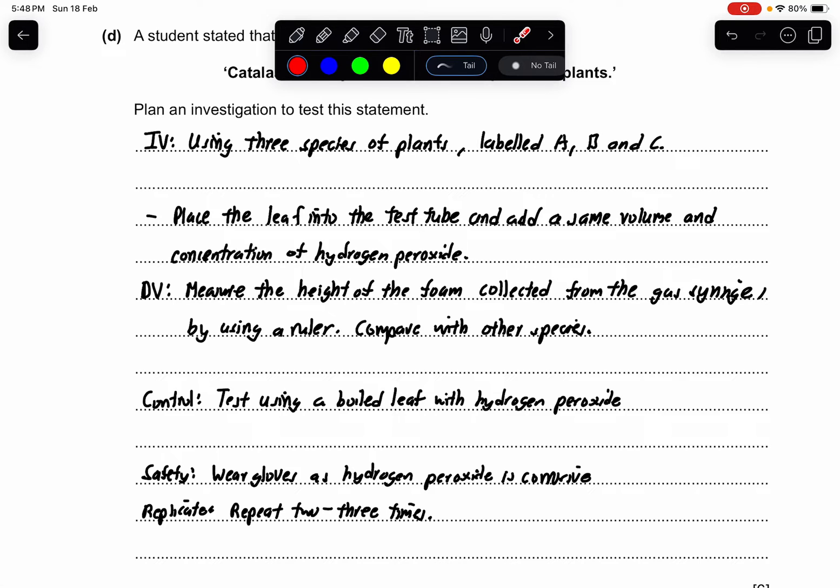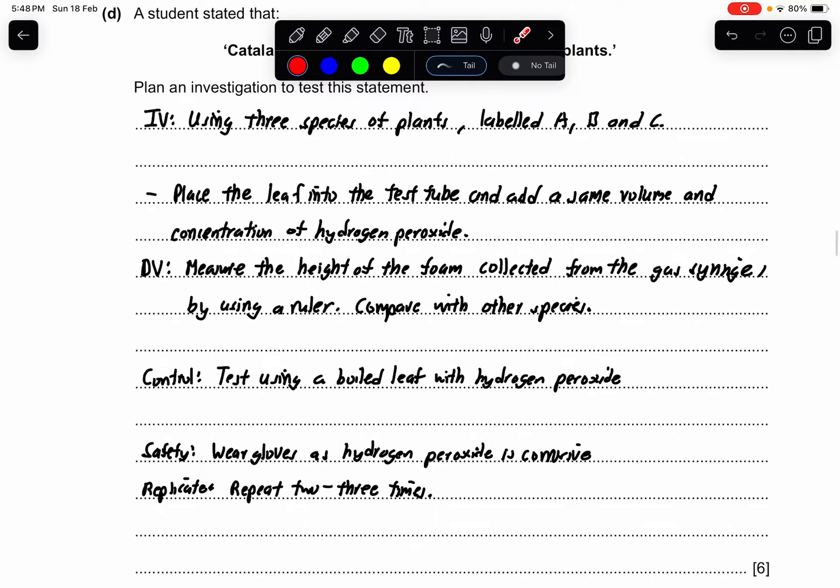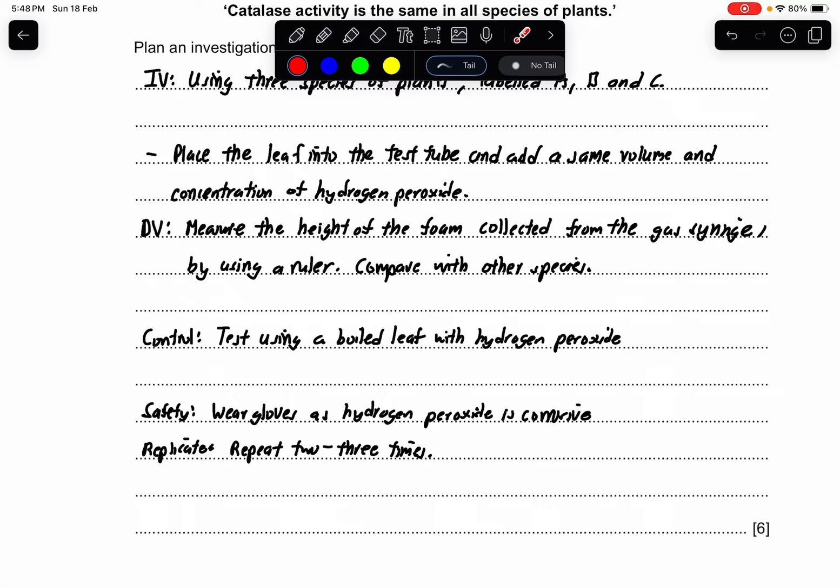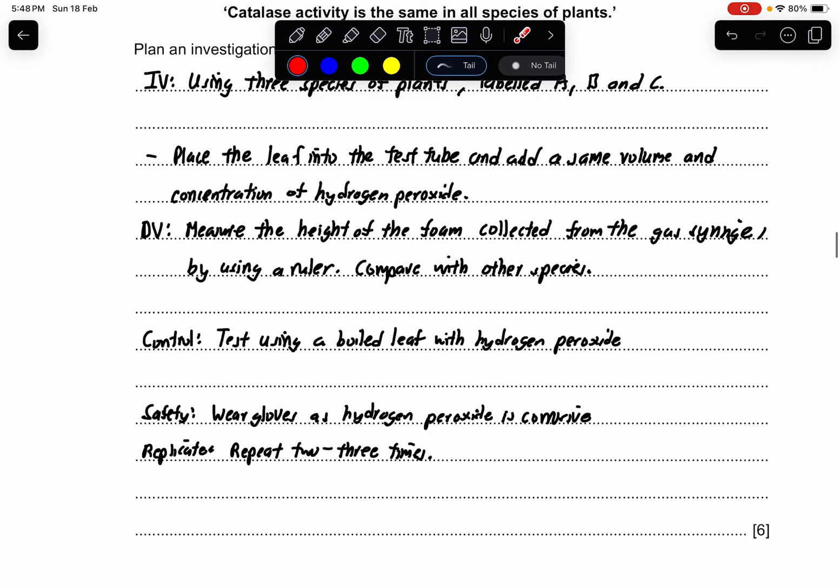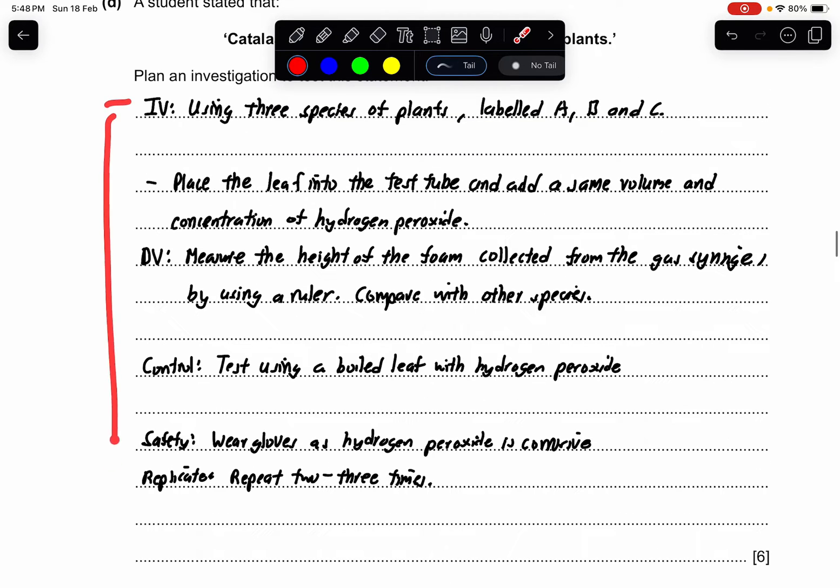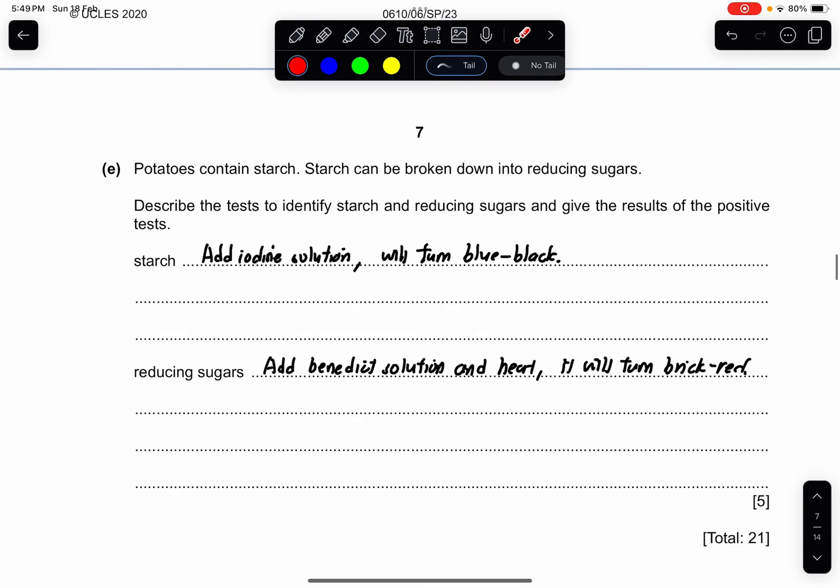The control: you can add a control to this investigation. Control meaning like, do you think that by adding this, does it affect the result? For this one, I will test using a boiled leaf. Why a boiled leaf? Because the enzymes inside the leaf have been denatured when it's in higher temperature. So when I add hydrogen peroxide, it will still change. The safety is to wear gloves as hydrogen peroxide is corrosive, and the replication is to repeat two or three times. This is how you get your six marks. You can either write in point form or in paragraph form. Either way will work.